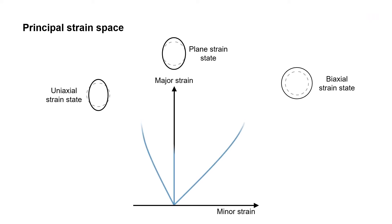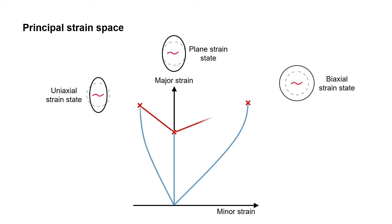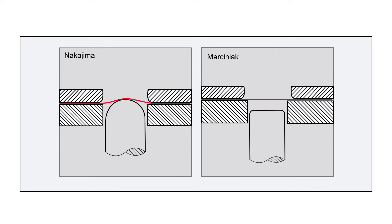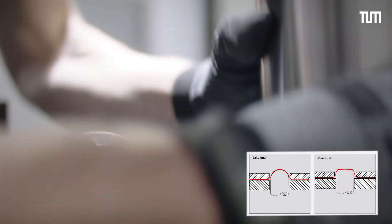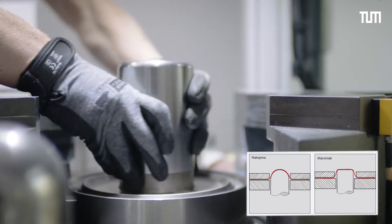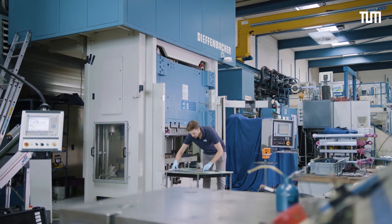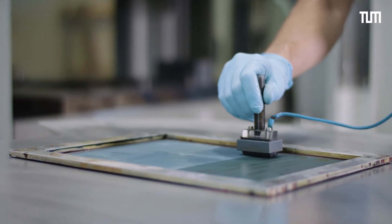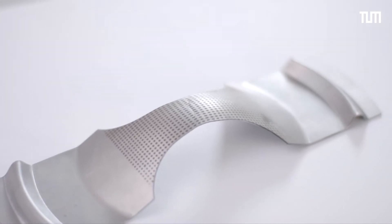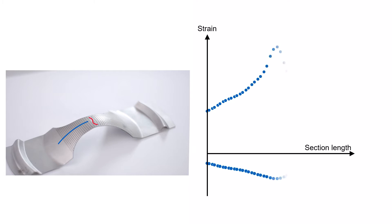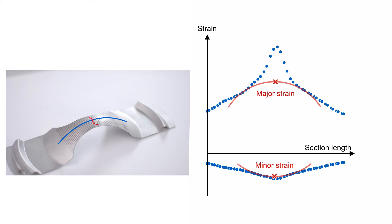The failure of a component during forming processes is determined by the so-called forming limit curve. Starting in the 1960s, Kila, Nakajima, and Marciniak developed test methods to determine the maximum possible strain before failure. In 2009, the localized evaluation method was standardized by DIN. For this method, a pattern of circles is etched on the material specimen. After the forming process with Zwickell's BUP 1000 sheet metal testing machine, changes in the pattern can be optically measured and the strain can be defined at the time of failure.